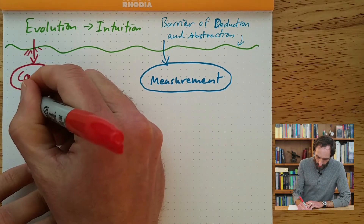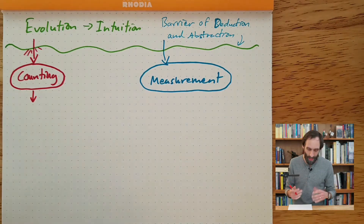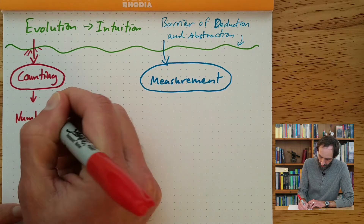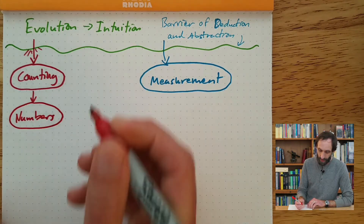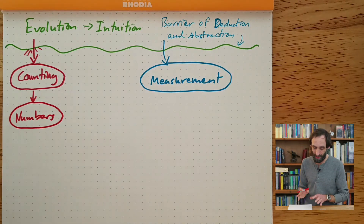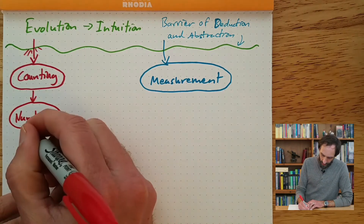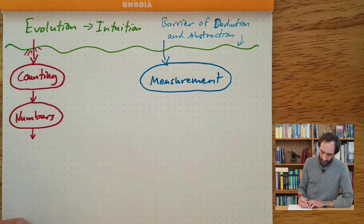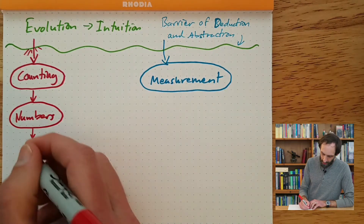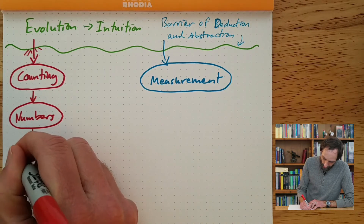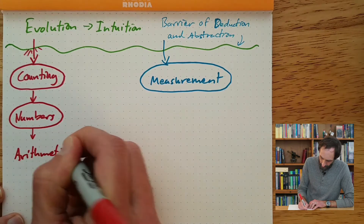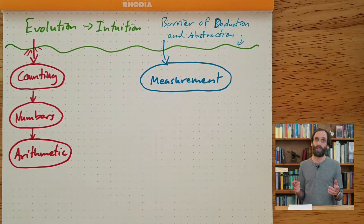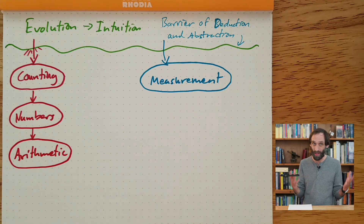I want to talk first about the counting track. Once we learn to count, a natural next step mathematically is creating a system of numbers. It turns out we can count things without numbers, but numbers make it a whole lot easier. Once we have numbers, we might realize we can do a lot more with them than just count things — there are different operations we can apply to numbers. And from that we get arithmetic: addition, subtraction, multiplication, division, and so on.